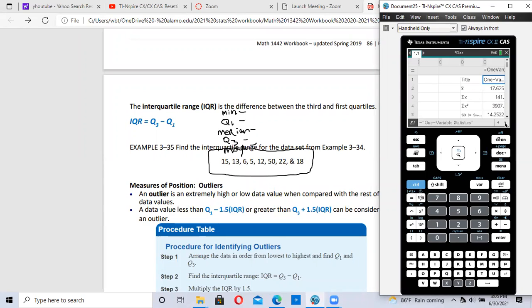And if I arrow over a little and scroll down, I have minimum, Q1, median, Q3, and the maximum.